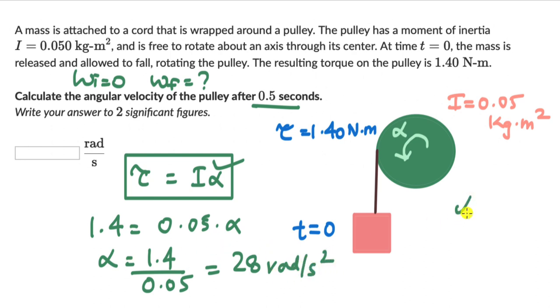Now we know alpha, we know omega I, and we know time. We are not interested in figuring out the angular displacement, so the right rotational kinematic equation can be this one.